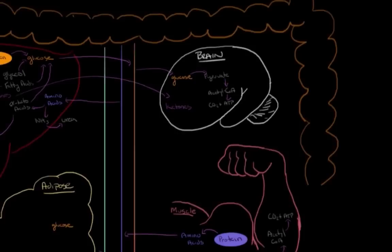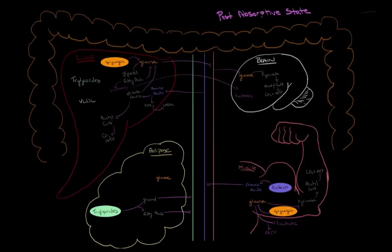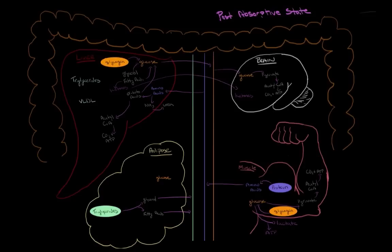Now that we've gone through the post-absorptive state and seen how the different tissues are breaking down and using energy, let's bring back in the absorptive metabolic pathways, so you can get an idea of all the different types of metabolic reactions that are going on depending on whether your body is trying to store nutrients or utilize them.